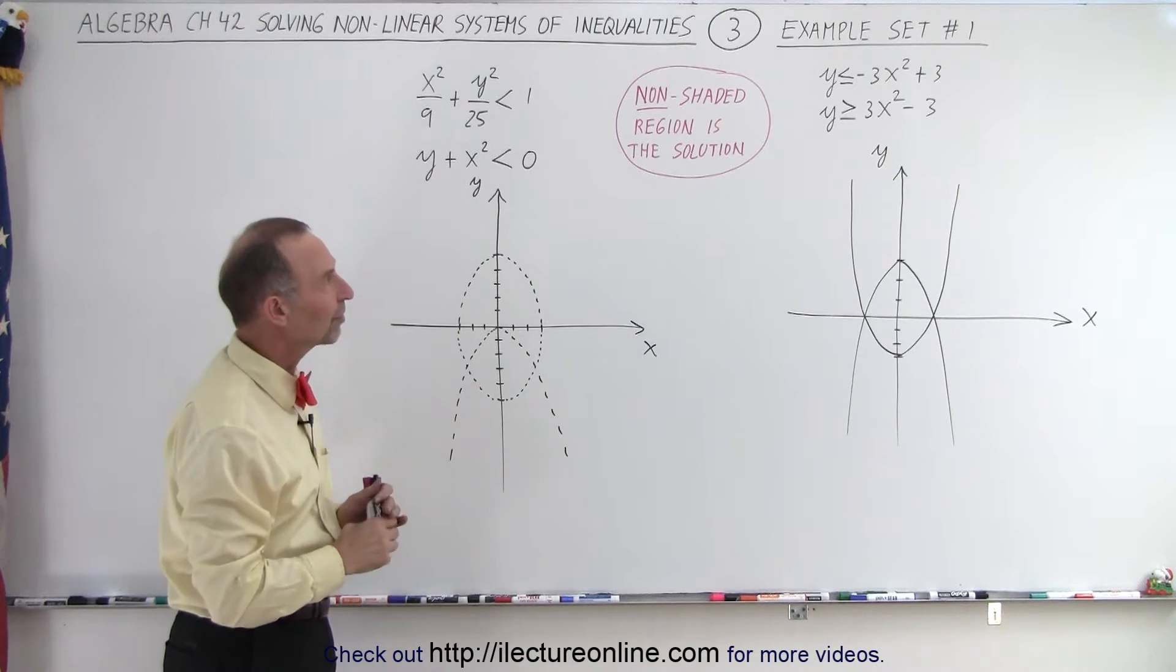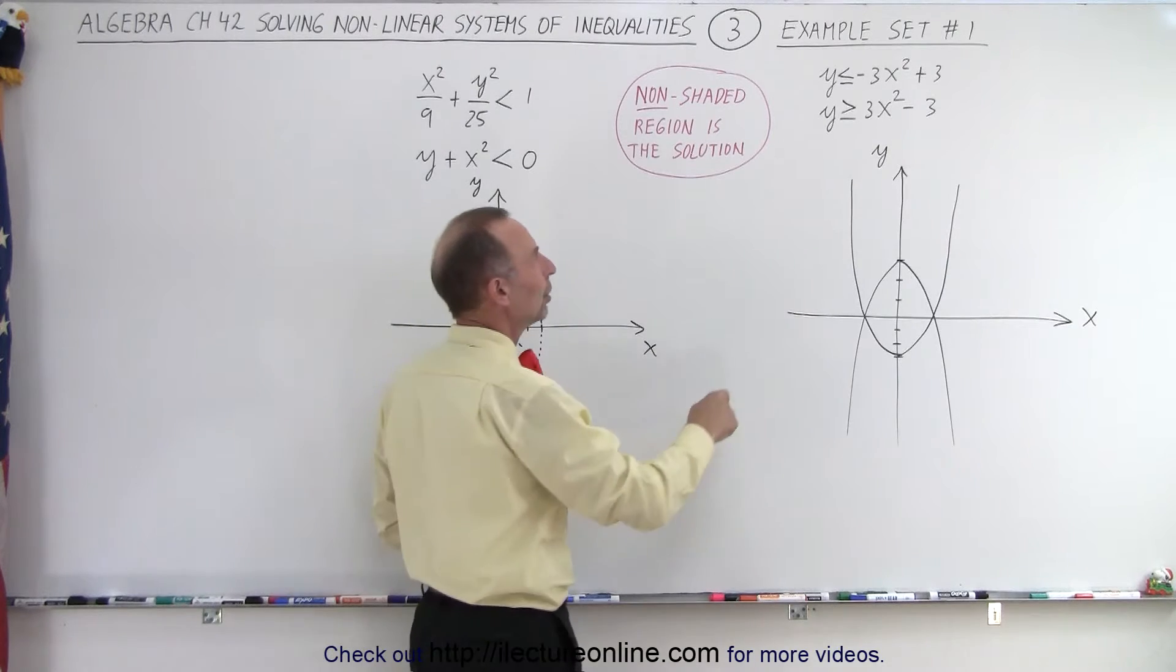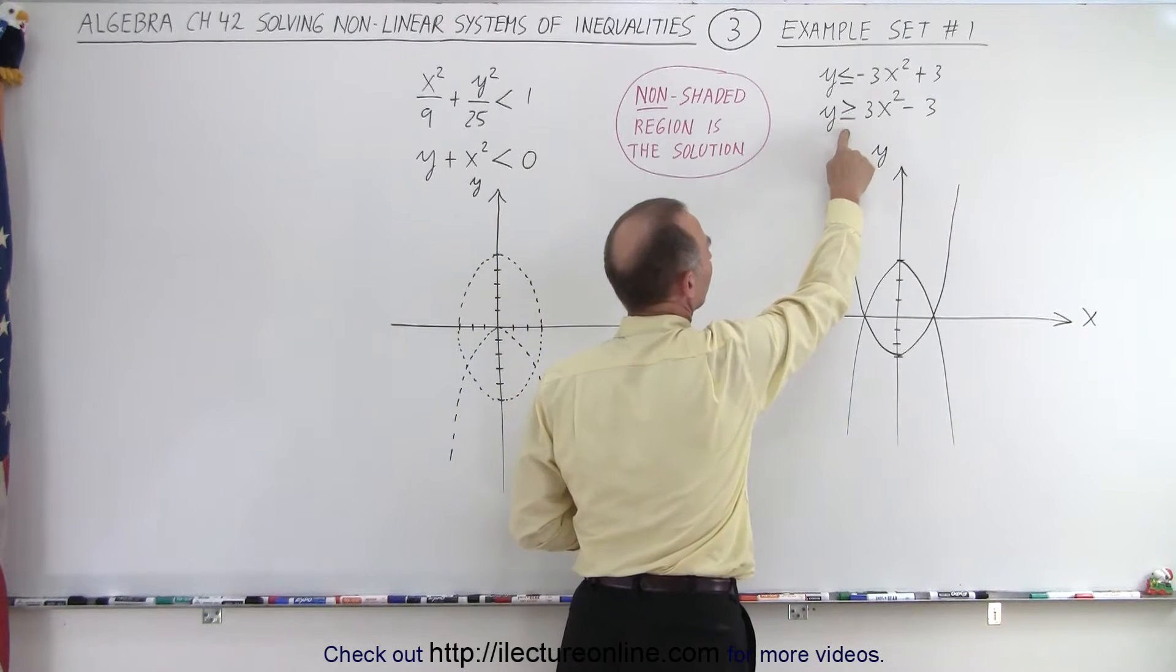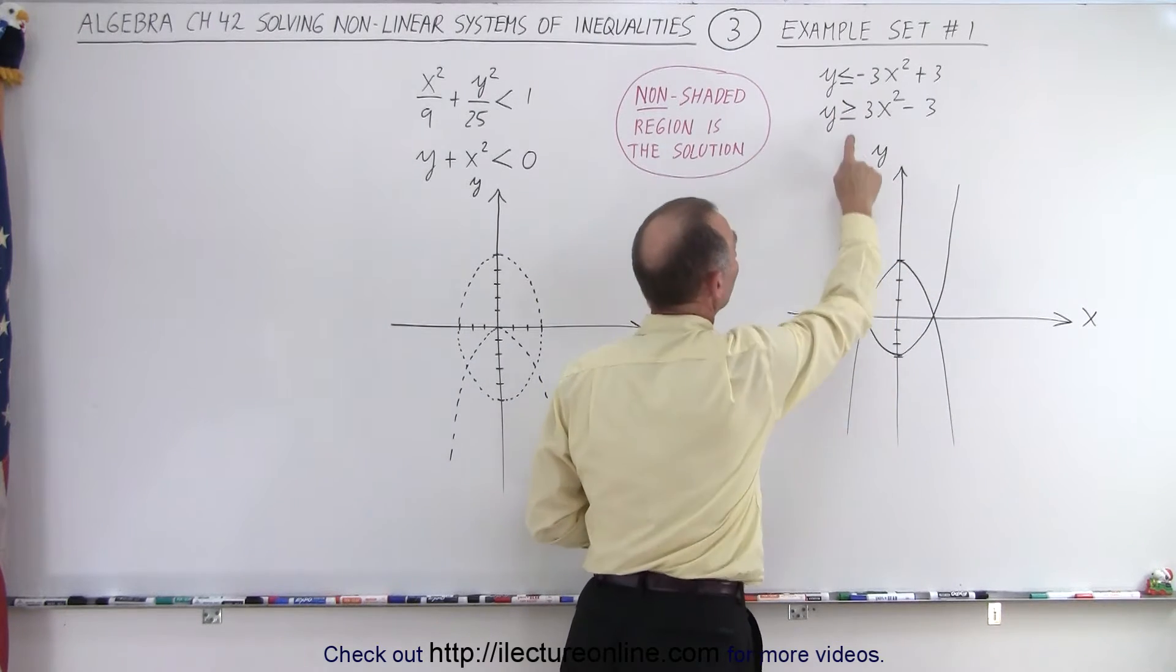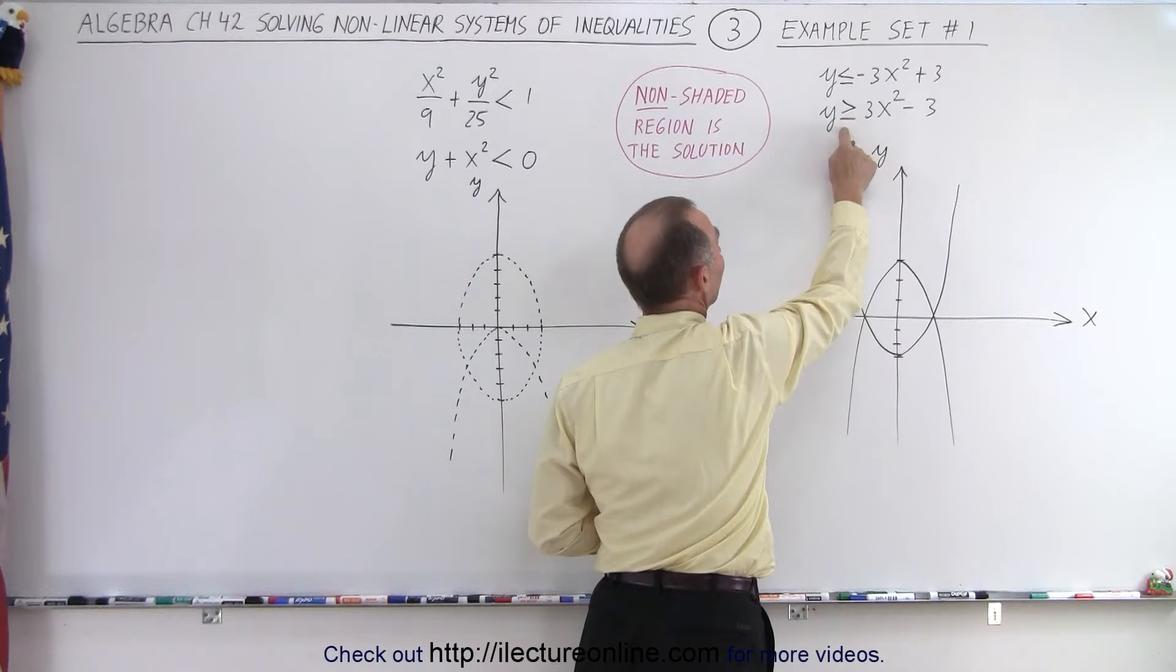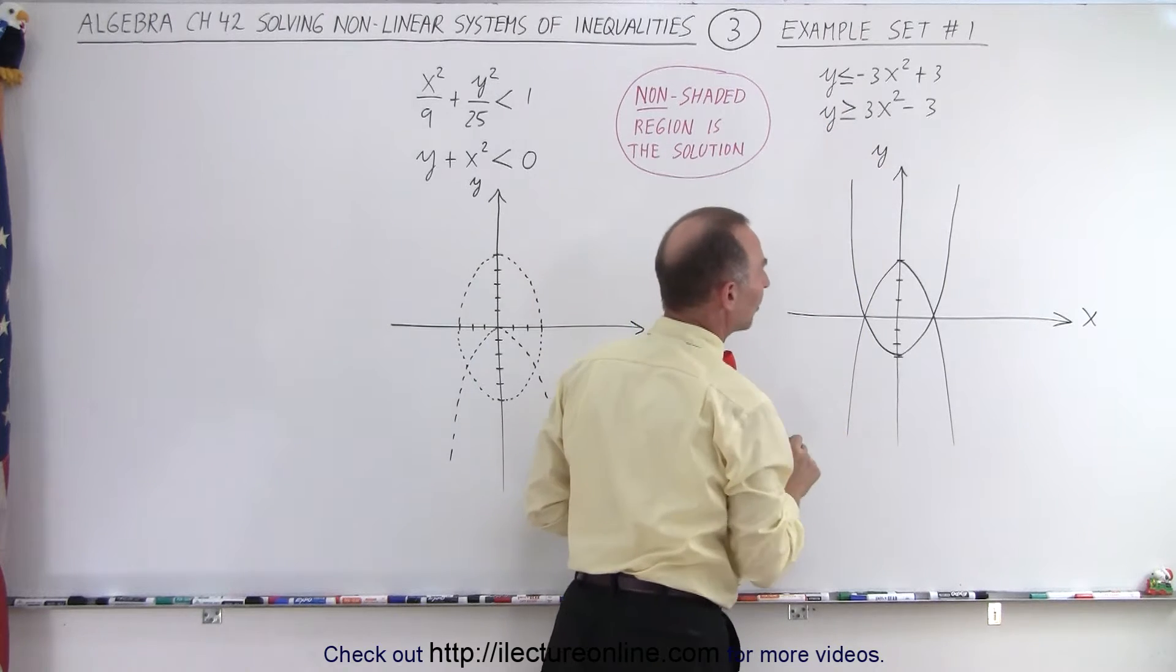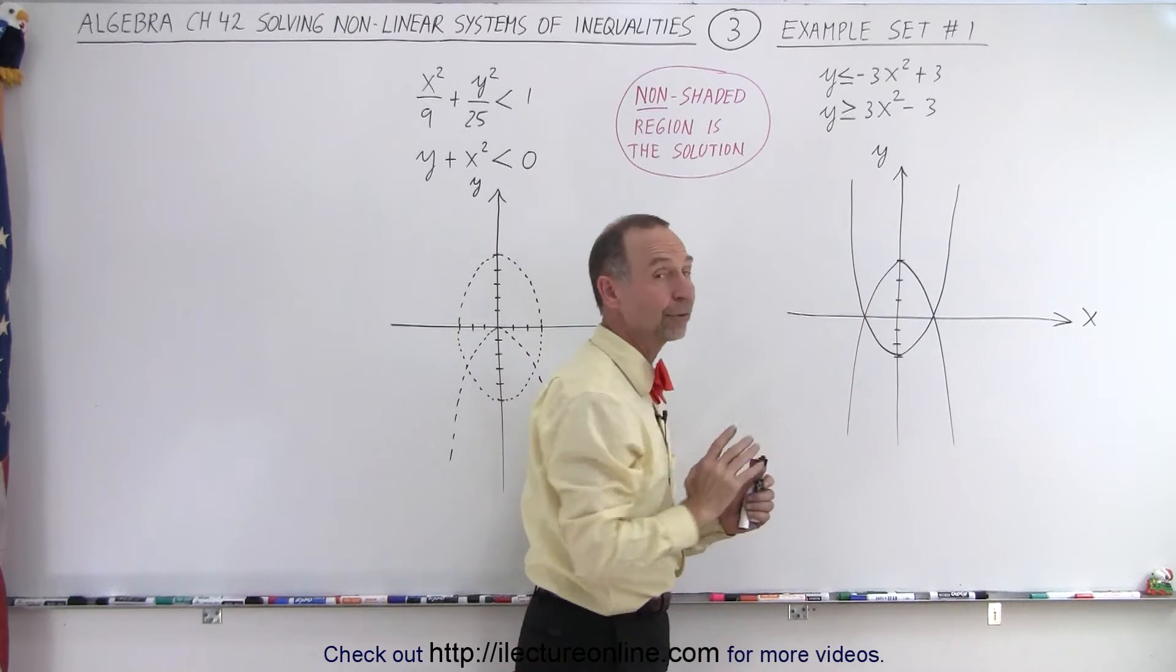But let's take a look at the first example. Notice that we have two parabolas—if these were equal signs, we'd end up with these two parabolas. Notice because of the equal signs here as well as inequality symbols, it includes the boundary region.